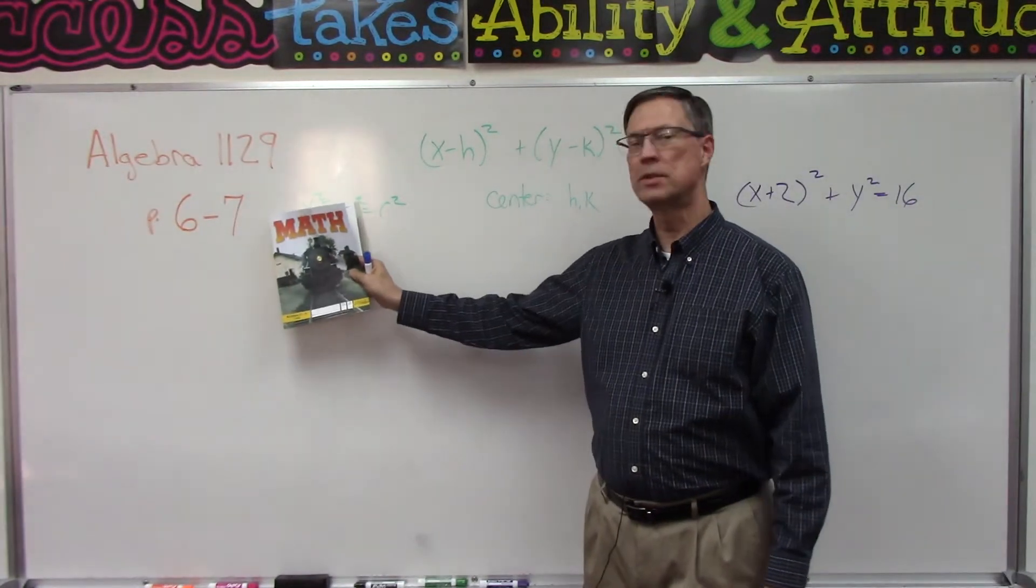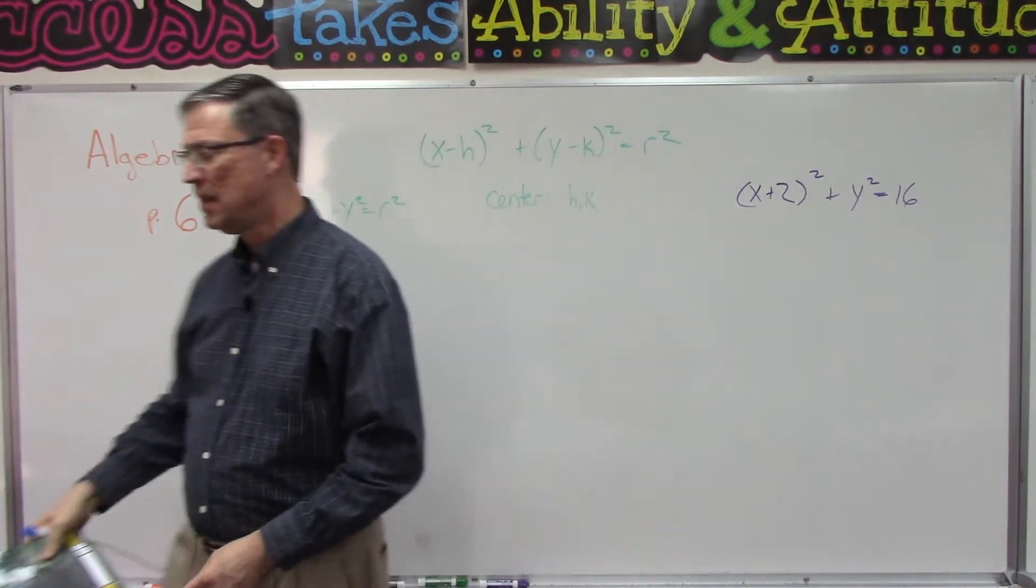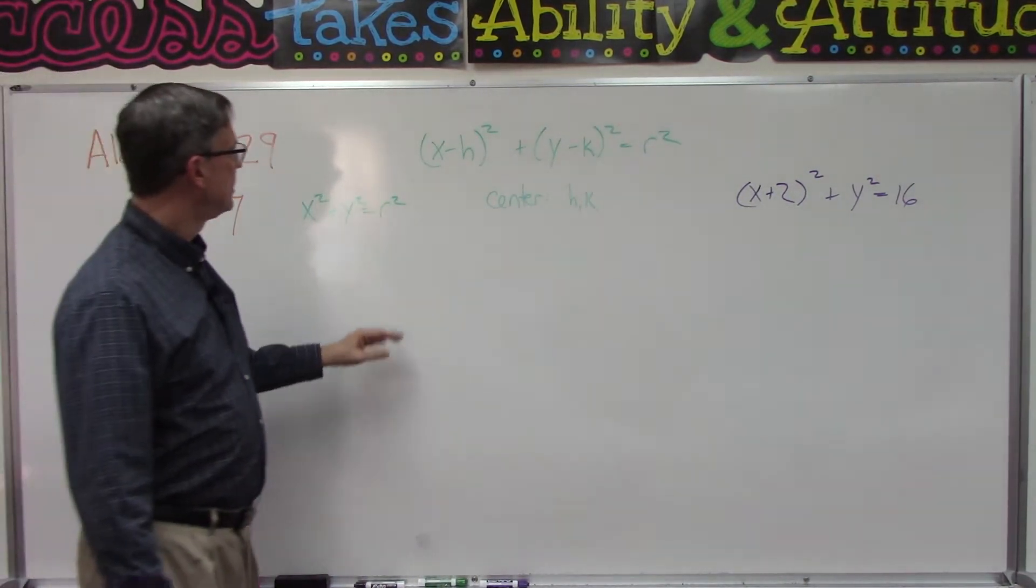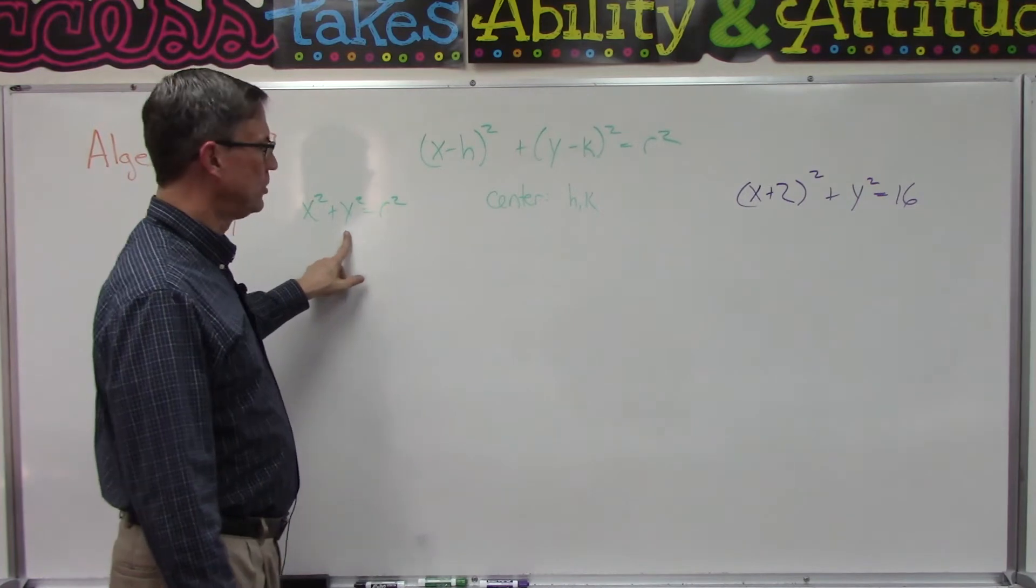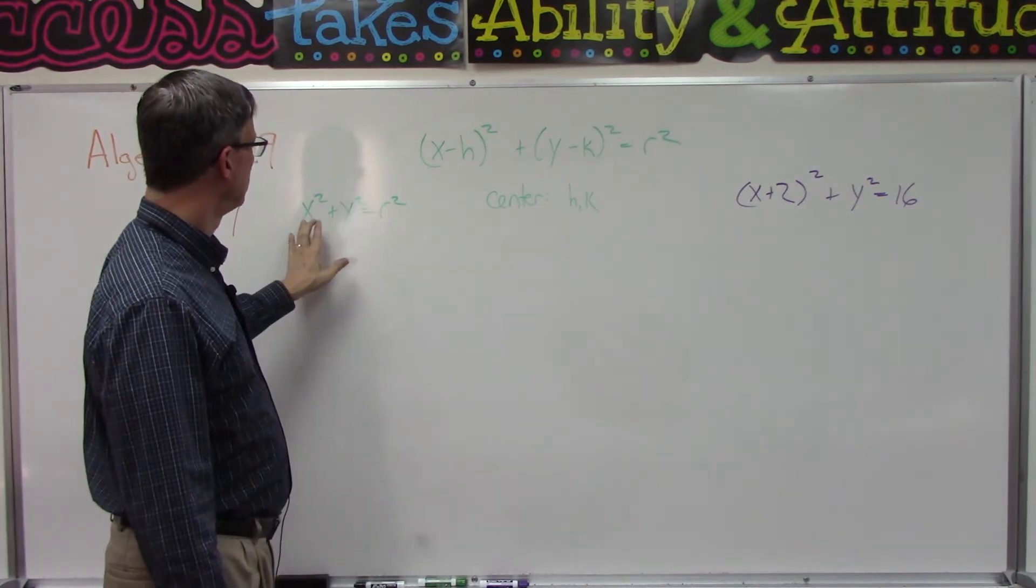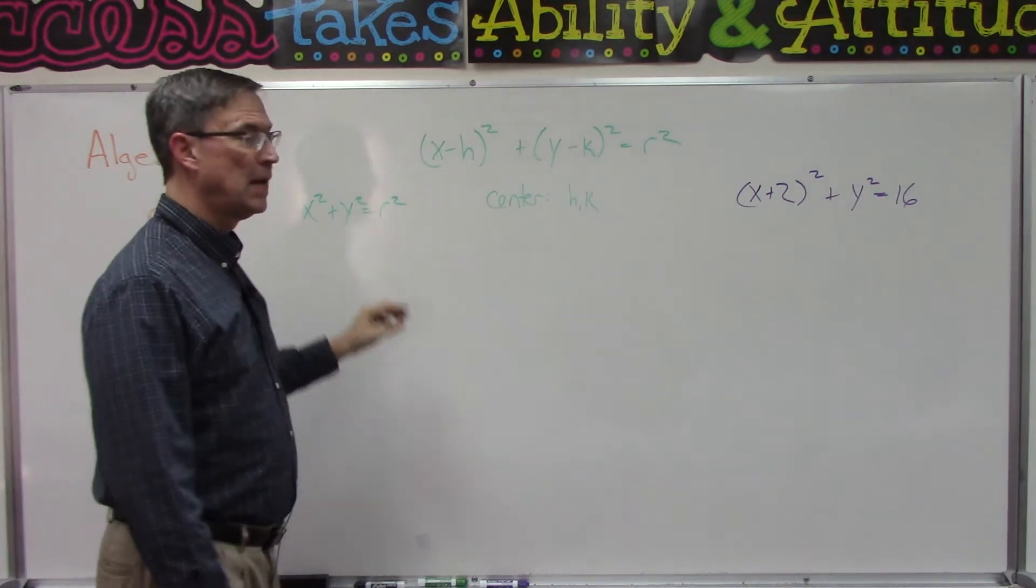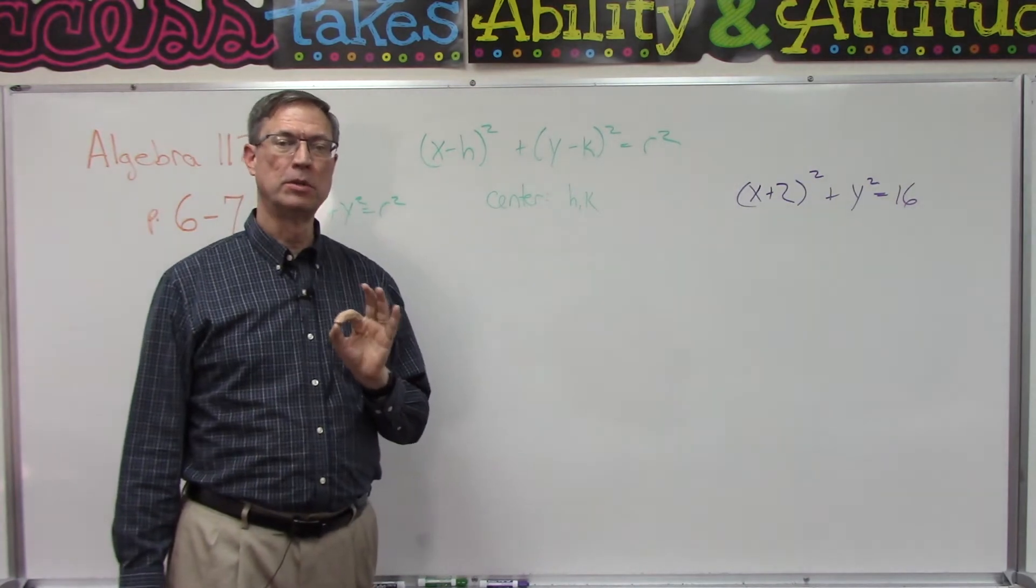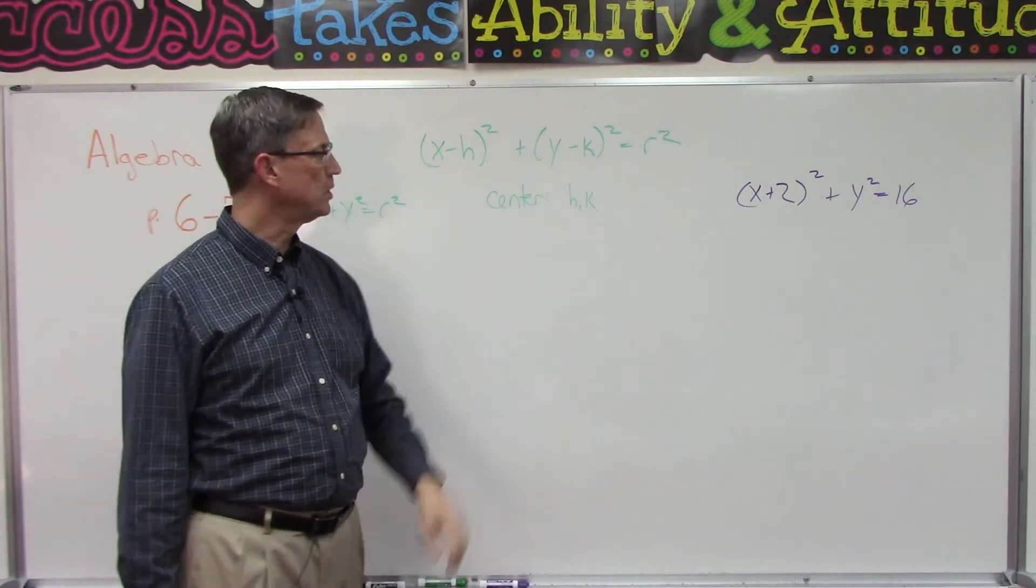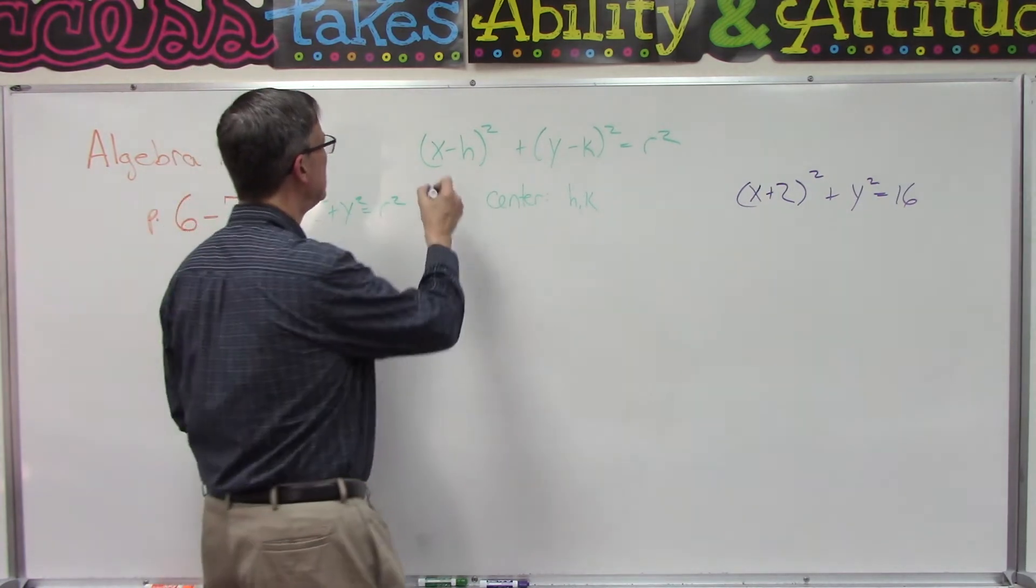All right, let's talk about pages six and seven. We're going to do circles again, just like we did on four and five, but this time the center is not at zero zero. Remember with this formula, we said if it looks just like this, x squared plus y squared equals a number, that means the center is at the origin zero zero, where the two axes cross each other.